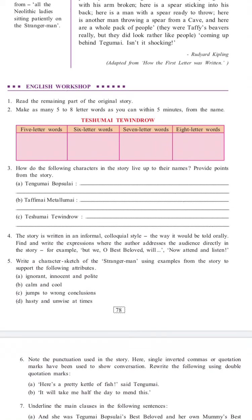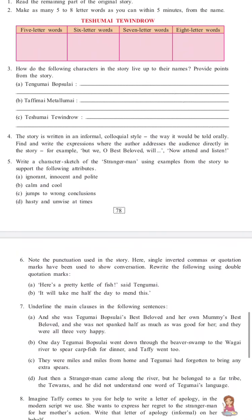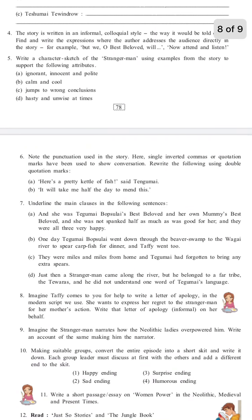Question 5: Write a character sketch of the stranger man using examples from the story to support the following attributes: A. Ignorant, innocent, and polite. B. Calm and cool. C. Jumps to wrong conclusions. D. Hasty and unwise at times.